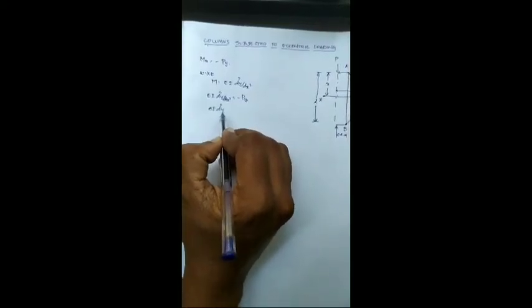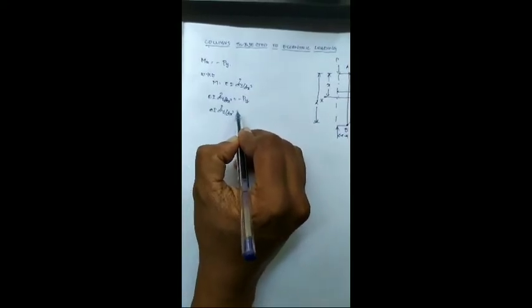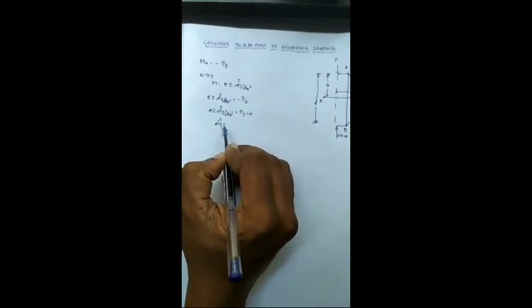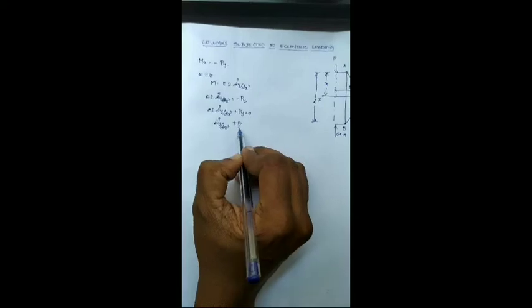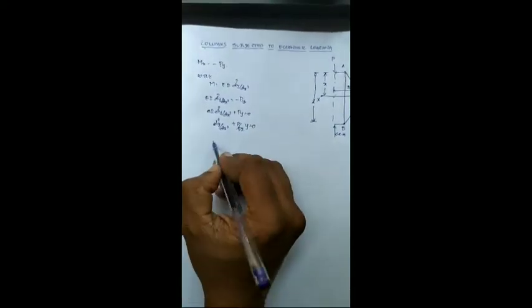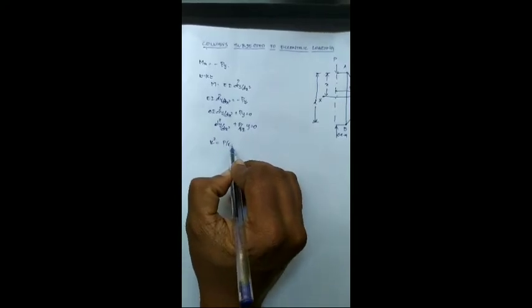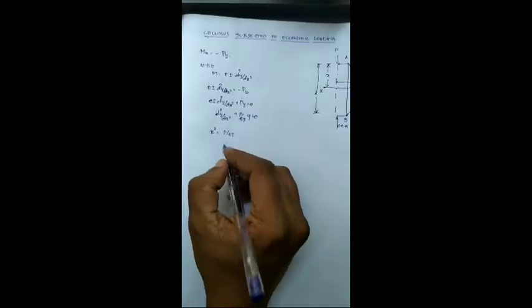Rearranging the same, we will be having the second order differential equation. To solve this second order equation, assume k square is equal to P by EI.